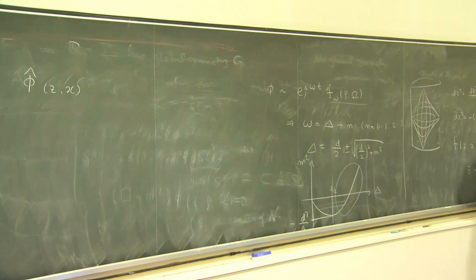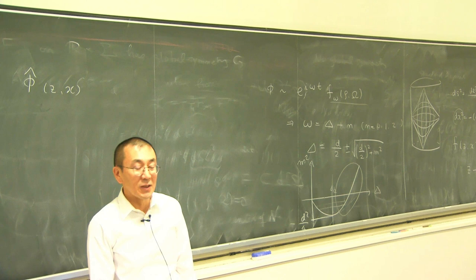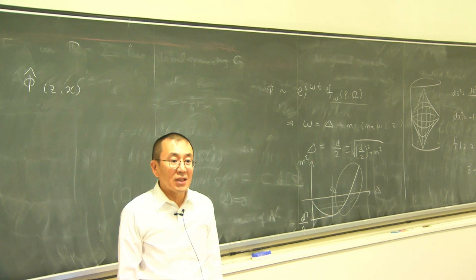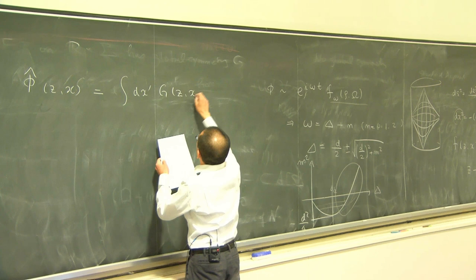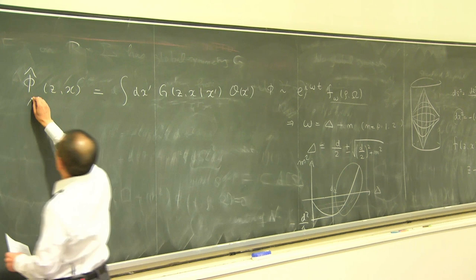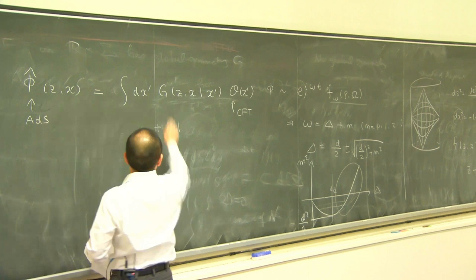If you do perturbative quantization of the scalar field, there is an operator that creates and annihilates the scalar field in the bulk, and that operator should be related to the operator on the boundary. This idea was initially pursued by Banks and collaborators in the late 90s, as soon as AdS/CFT correspondence was proposed, and refined by Kabat, Lifschytz, and collaborators. The bulk operator can be expressed as an integral of the corresponding CFT operator with a smearing kernel.